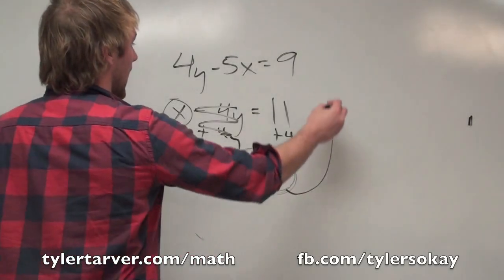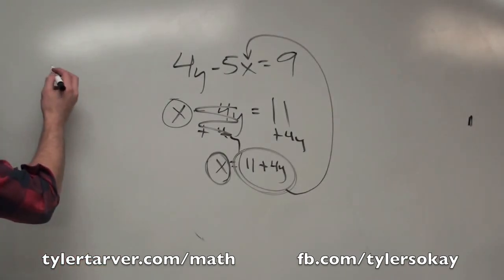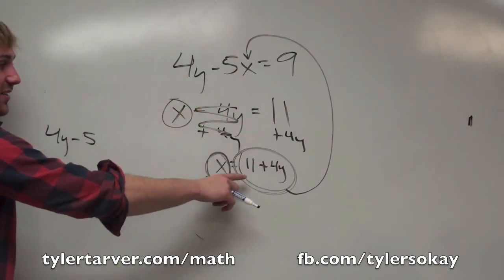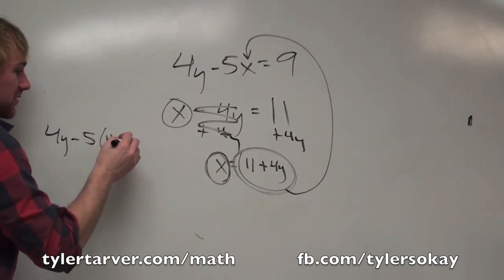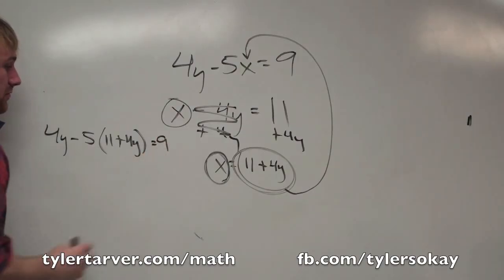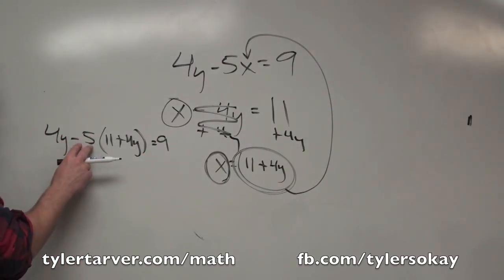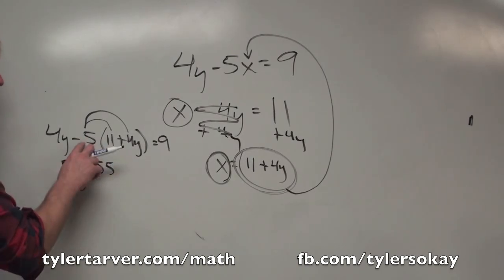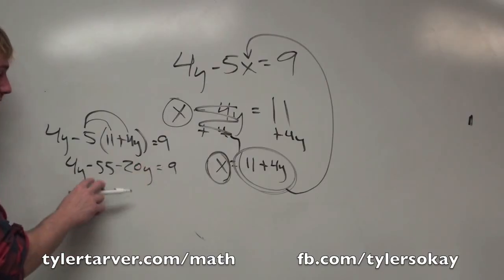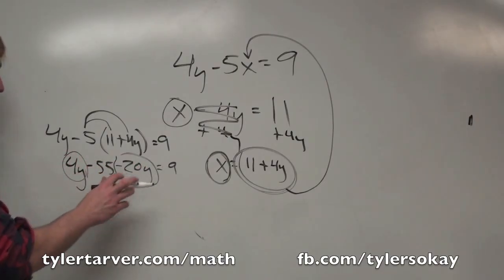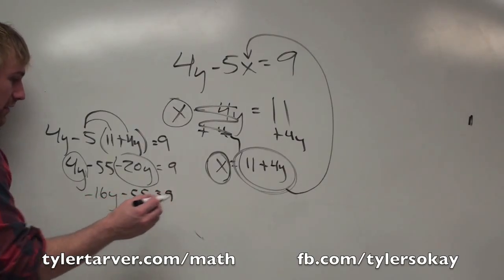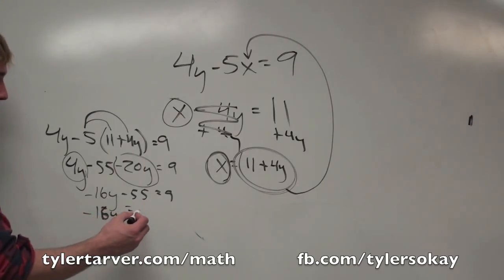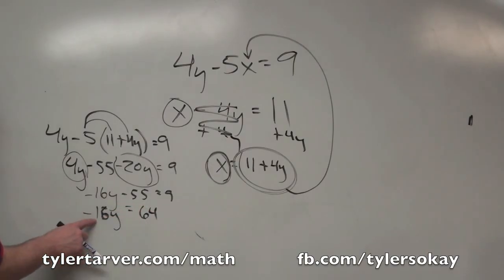Now I have what x is equal to — 11 plus 4y. So in the other equation, I can plug this in for x. I'll rewrite it: 4y minus 5 times (11 plus 4y) equals 9. I'm going to distribute that negative 5 — multiply both terms inside. So now we've got 4y minus 55 minus 20y equals 9. Combining like terms: 4 minus 20 is negative 16y, minus 55 equals 9. Then add 55 to both sides to get negative 16y equals 64.